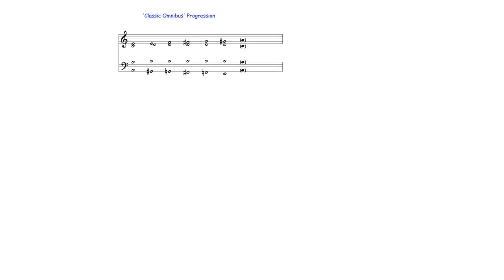In this way, the classic omnibus progression potentially includes several modulations, the possibilities of which may be expanded when the potential for the augmented sixth chords to be located on other degrees of a key is considered. Like many other tetrachord-type progressions, omnibus progressions may be used over either ascending or descending chromatic bass lines. Unlike other types, however, in omnibus progressions, around the parts moving in contrary motion, the other parts typically include repeated or sustained notes, which create a pedal-like effect.